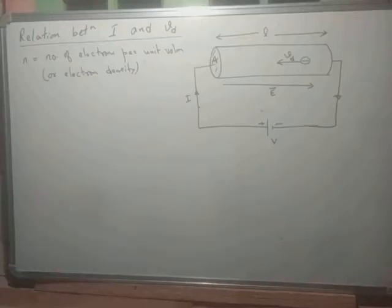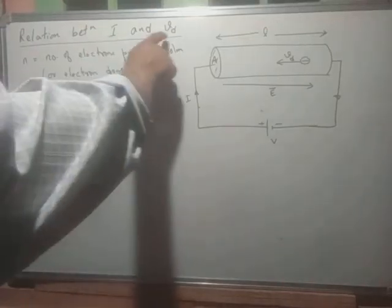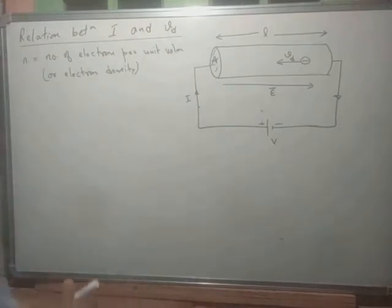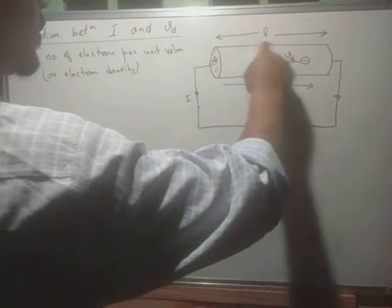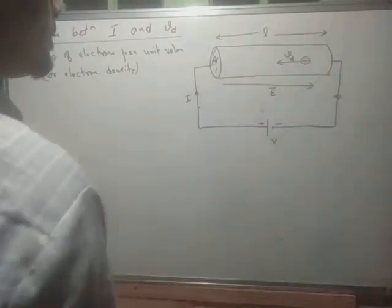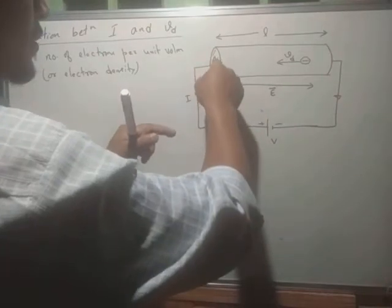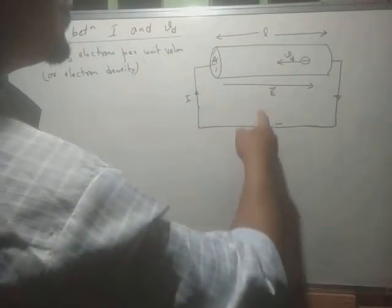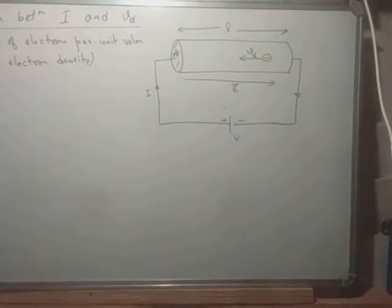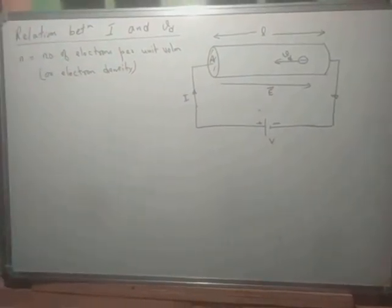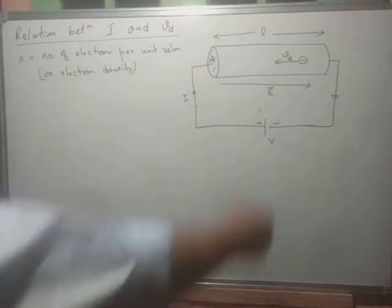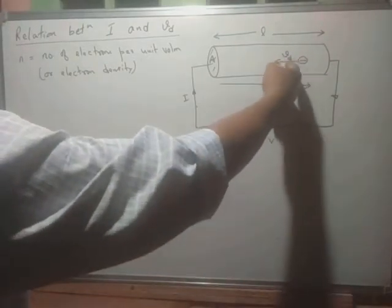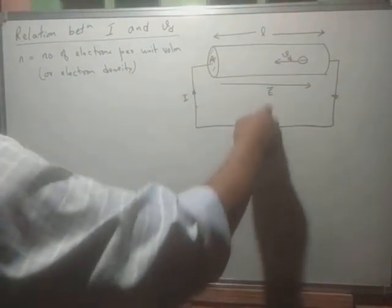We're looking at the relation between current I and drift velocity V_D. We have a conductor of length L and area of cross-section A. When you connect the two ends of the conductor to a potential difference V, an electric field is produced inside the conductor, and electrons drift towards the positive terminal with a drift velocity V_D.